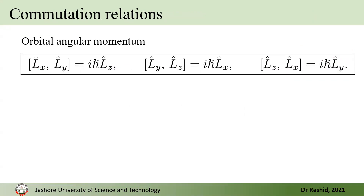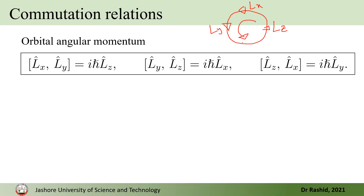We talked about the commutation relations between these operators. We showed that the commutator of Lx with Ly gives iħ Lz. Similarly, the commutator of Ly with Lz gives iħ Lx. This is easy to remember by thinking of a circle: rotating anti-clockwise, if you take any two components their commutator gives the third one multiplied by iħ.